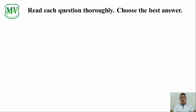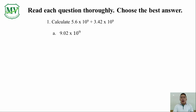Let's start with number 1. Calculate 5.6 x 10 raised to the power of 9 plus 3.42 x 10 raised to the power of 9. Here are the choices. A: 9.02 x 10 raised to the power of 9. B: 8.04 x 10 raised to the power of 9.